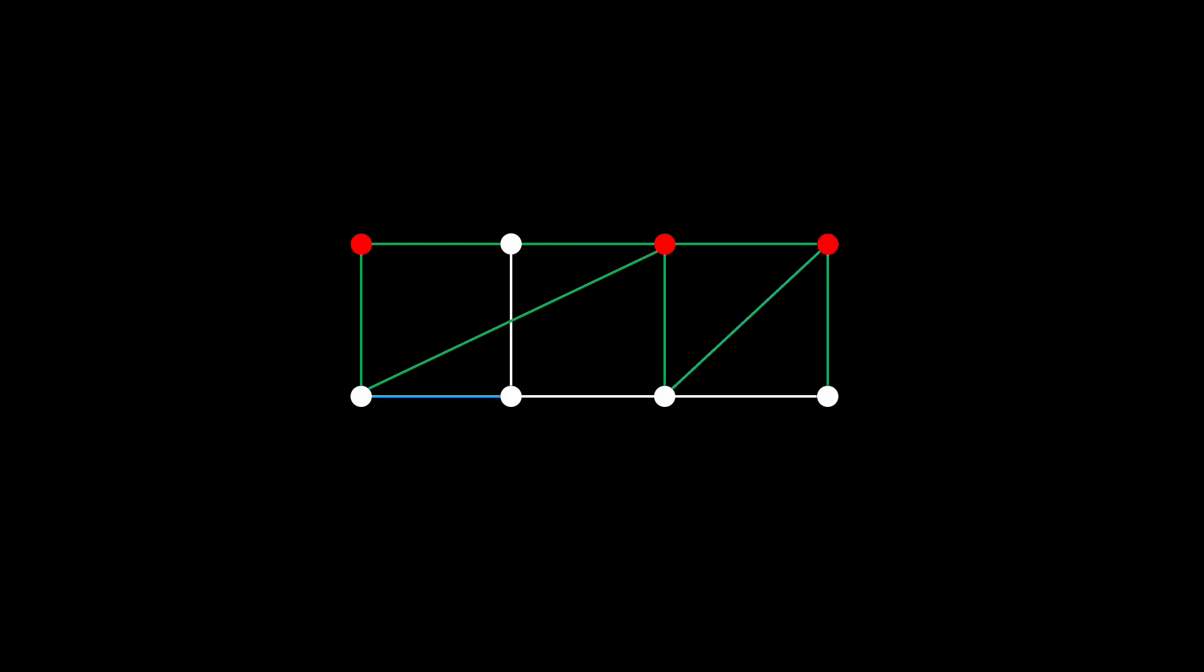This algorithm will clearly give a vertex cover, since an edge is only ever removed from consideration once it is covered. Moreover we cover at least one edge in each iteration, so at some point we must run out of uncovered edges.